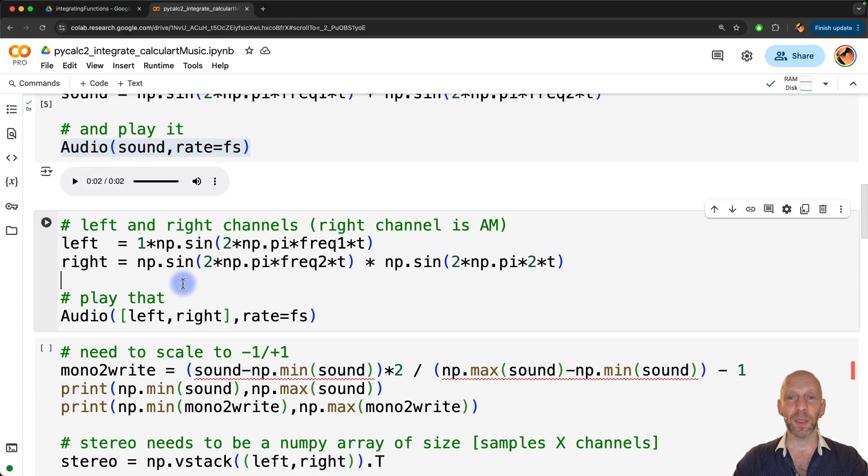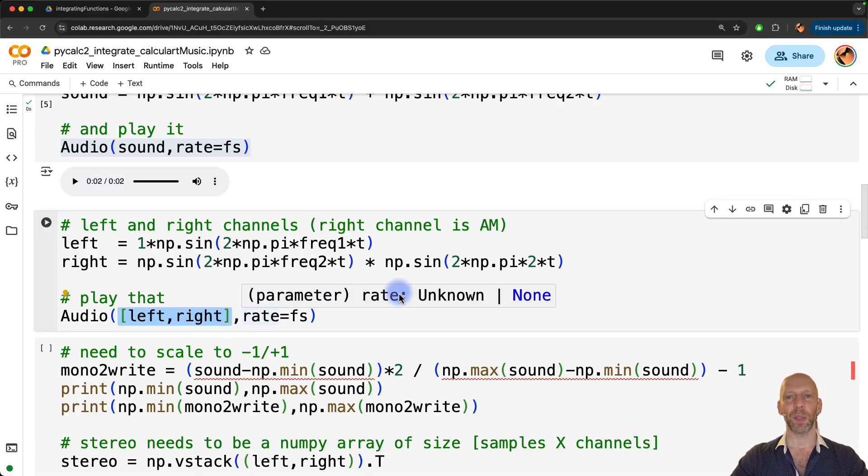Here I am separately specifying a right channel and a left channel. So into the left channel, and if I had earbuds on, this would be in the left ear, this is going to be the sine of 2 pi f t. So that's just like what I had above. And here on the right channel, so going into the right ear, this is going to be the sine of 2 pi f 2 times t, and then I'm modulating it by a slower sine wave with a frequency of 2 hertz. So this is going to create an amplitude modulated signal. And then I'm playing that. So we just input the two channels as a list in this case. You can also input them as a numpy matrix. I'll get back to that in a moment.